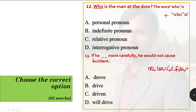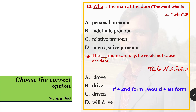Option number 13: 'if he dash more carefully, he would not cause an accident.' This is a second conditional sentence. In second conditional, the if-clause takes the second form of the verb, and the other clause uses would plus first form. Since the second part already has 'would cause', the if-clause needs the second form. The answer is 'drove': if he drove more carefully, he would not cause an accident.